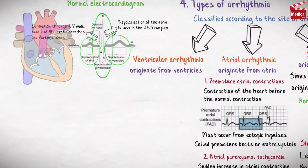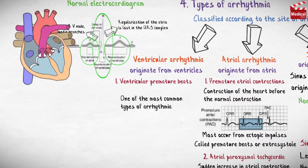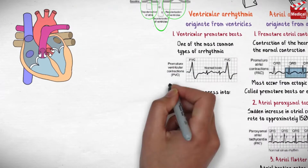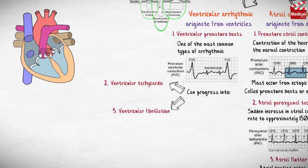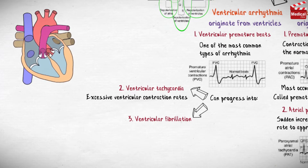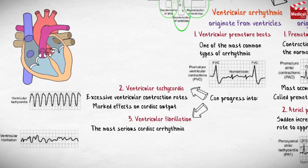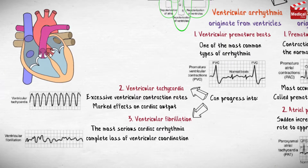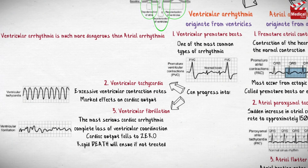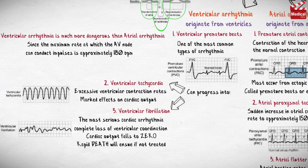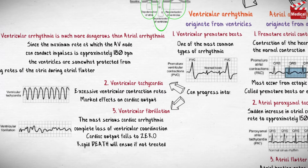Conditions of ventricular arrhythmia: Ventricular premature beats, one of the most common types of arrhythmia, can progress into ventricular tachycardia or fibrillation. Ventricular tachycardia: excess of ventricular contraction rates, which can have marked effects on cardiac output. Ventricular fibrillation: the most serious cardiac arrhythmia, characterized by a complete loss of ventricular coordination — cardiac output falls to zero and rapid death will ensue if not treated. Ventricular arrhythmia is much more dangerous than atrial arrhythmia, since the maximum rate at which the AV node can conduct impulses is approximately 180 beats per minute, meaning the ventricles are somewhat protected from high atrial rates during atrial flutter. However, the ventricles are not protected from very high beating rates if the arrhythmia arises in the ventricles.